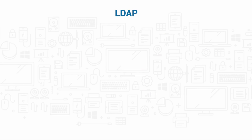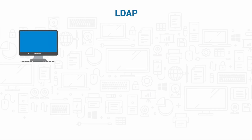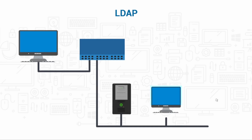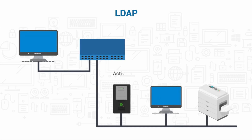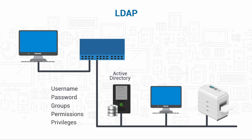So how exactly does LDAP work? Let's say we have a client who is trying to access network resources. The network server has been configured with Active Directory. Active Directory includes a database with details about authorized network users' information, including usernames, passwords, and groups. It also stores information about various network resources, including the level of access each user has to that resource.